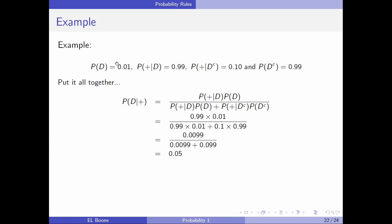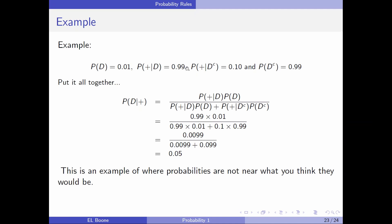We need one other piece: the probability of D complement, which is 1 minus 0.01 = 0.99. We want the probability of D given positive. Using Bayes' formula: probability of D given positive equals probability of positive given D times probability of D, over probability of positive given D times probability of D, plus probability of positive given D complement times probability of D complement. Put it all together and you get 0.05. Even though the test reads correct 99% of the time when you have the disease and only shows positive 10% of the time without it, the probabilities don't come out as expected because this is such a rare disease.